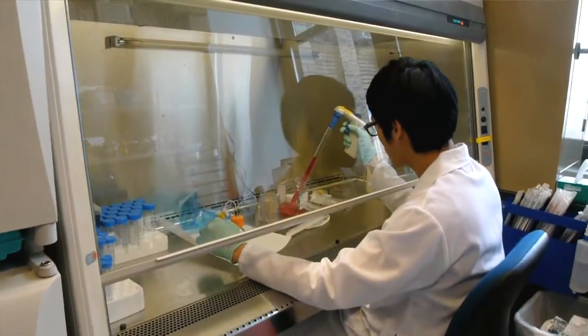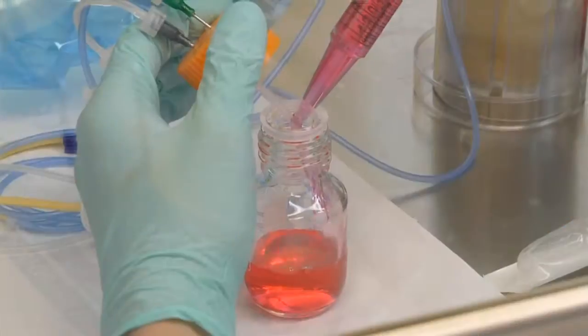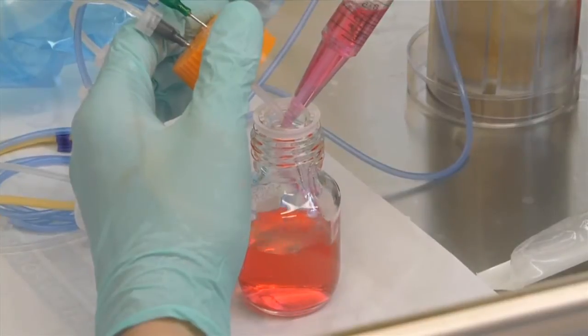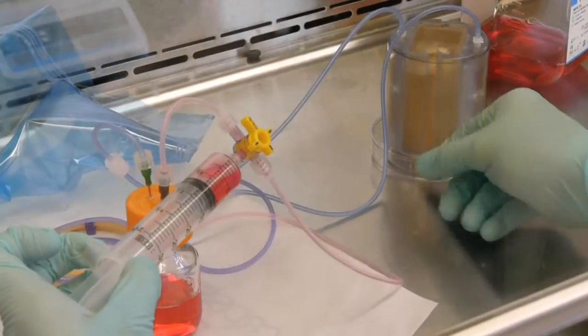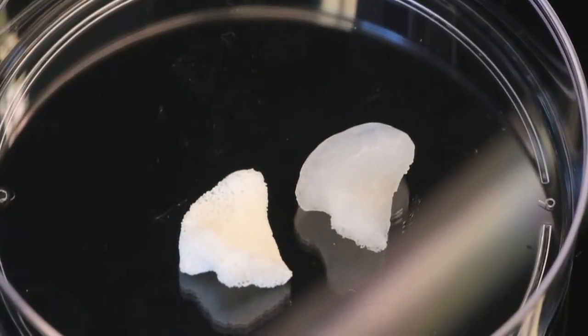Once you have this you would take cells from the patient and we isolate these stem cells, we infuse them into the scaffold, we condition this bone for about three weeks and you put it back. So there is nothing artificial in it and you would actually grow a piece of bone that would totally resemble the bone that you are replacing.